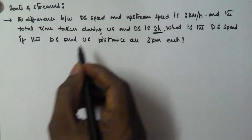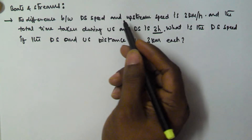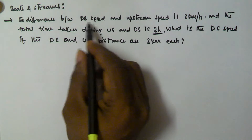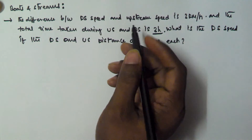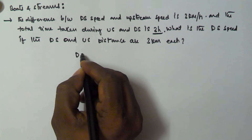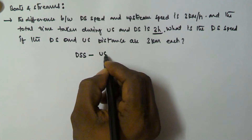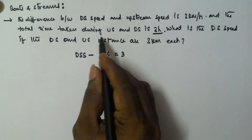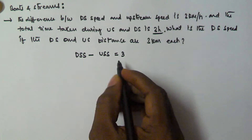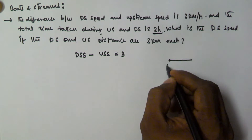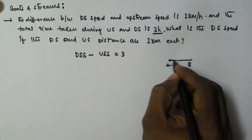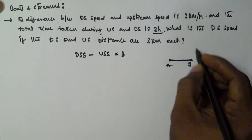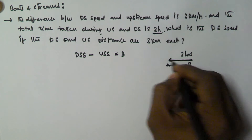It is given that the difference between downstream speed and upstream speed is 3 km per hour. We know that downstream speed is always greater than upstream speed. So the difference — downstream speed minus upstream speed — is equal to 3 km per hour. The total time taken during upstream and downstream: suppose he is travelling from position A to position B. The total time taken to travel from A to B and B to A is 3 hours.